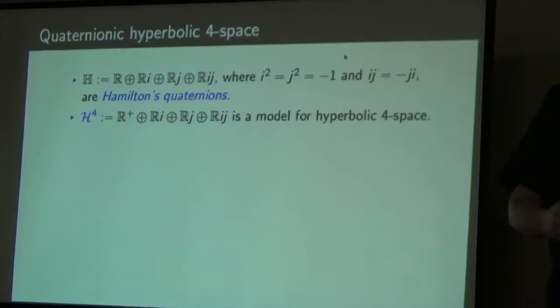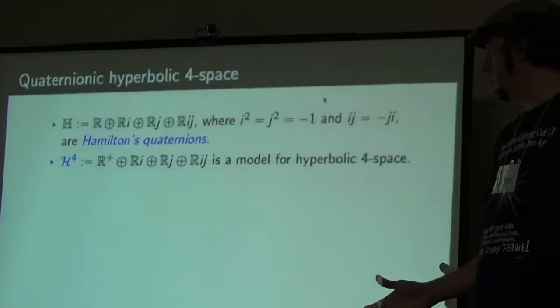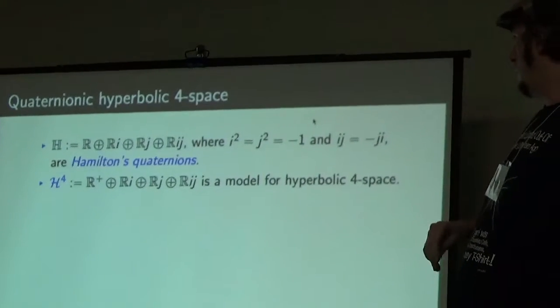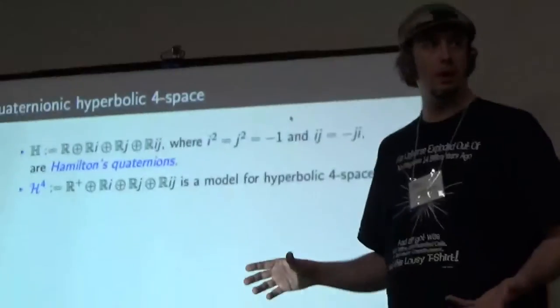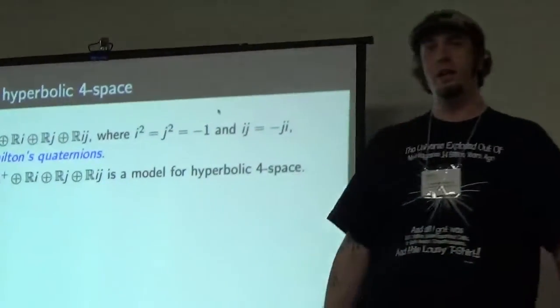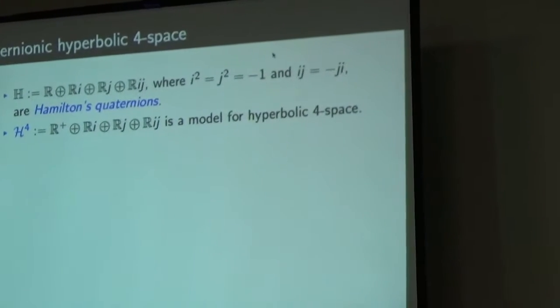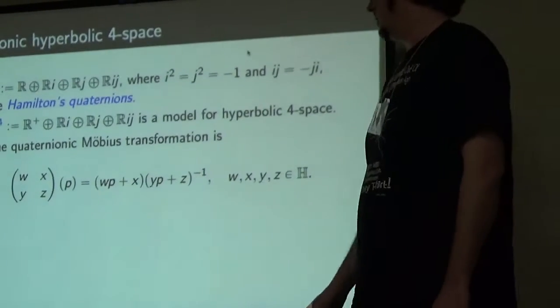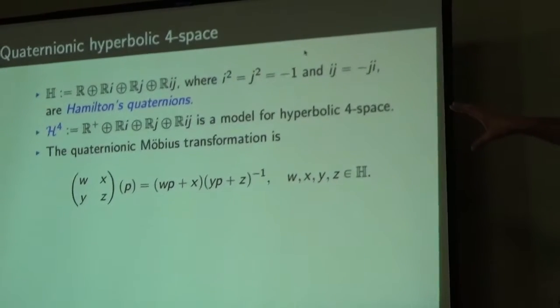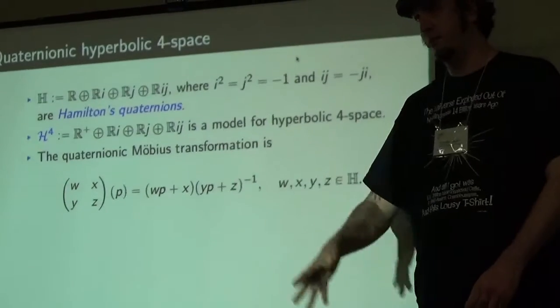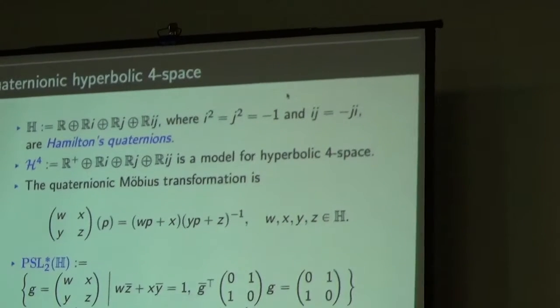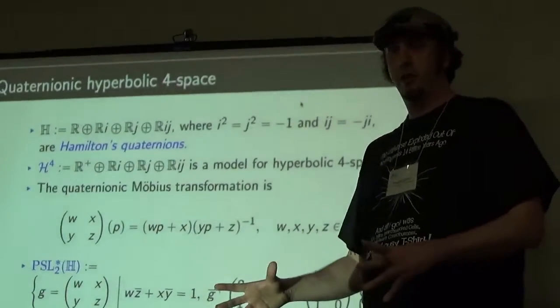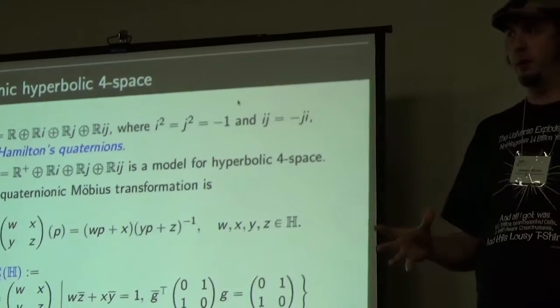What we want to do is we want to do this over the quaternions instead of over the complex numbers. So first we need a notion of quaternionic hyperbolic four-space. We all know what Hamilton's quaternions are, and a cool thing we can do is I get an upper half space model for hyperbolic four-space by just looking at quaternions with positive scalar part. The pure quaternions are the boundary of the space, and I just push upwards from the scalar part. I also have a quaternionic Mobius transformation on this space.